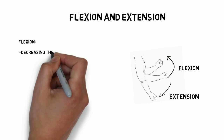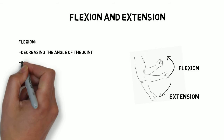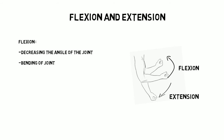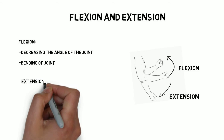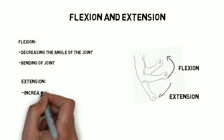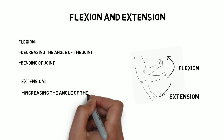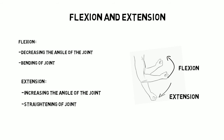So remember: flexion is decreasing the angle of the joint, or bending of the joint, and extension is the movement in which you increase the angle of the joint or straighten the joint.